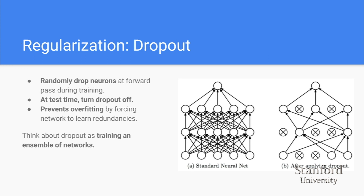Dropout is a form of regularization that randomly drops neurons during the forward pass in training. It prevents overfitting by forcing the network to learn more important abstractions with fewer neurons. Think of dropout as training an ensemble of networks — each forward pass with dropped neurons creates a slightly different network. During test time, make sure to turn dropout off to leverage the shared power of all networks, ensuring activations are already scaled correctly.